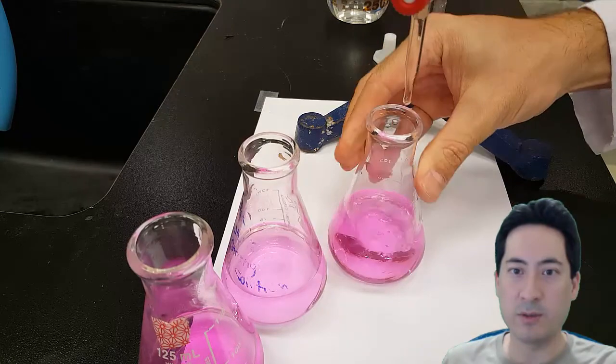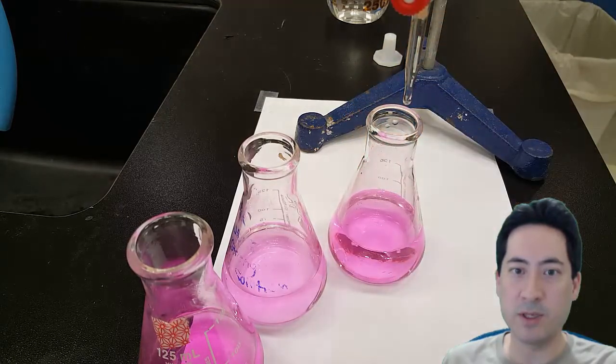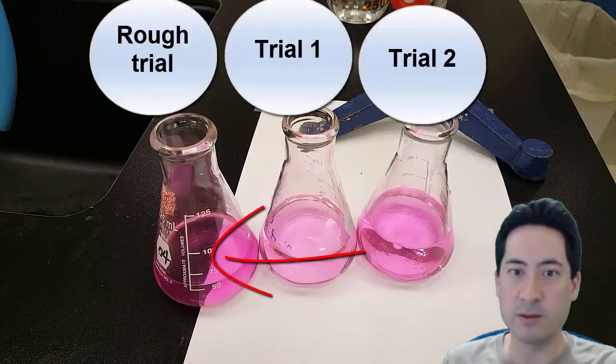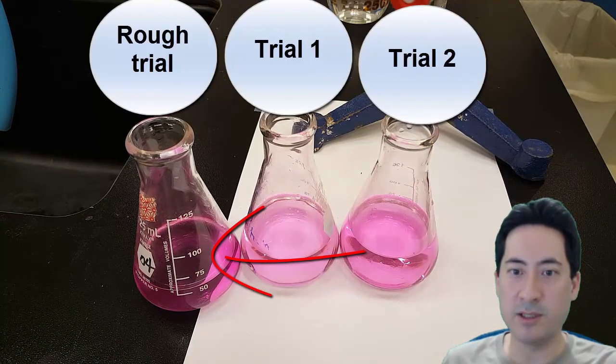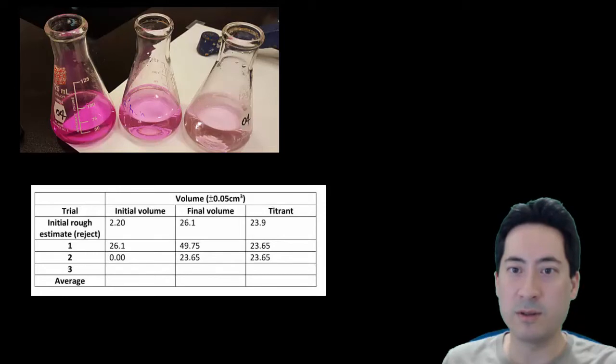And if I add one more drop, you can see that the pinkness goes right over to that almost to the rough area here. And so that area of where it was just lightly pink, that was also, you can see from this picture here, was 23.65. So I'm taking that as my end point.